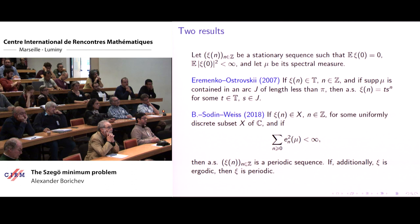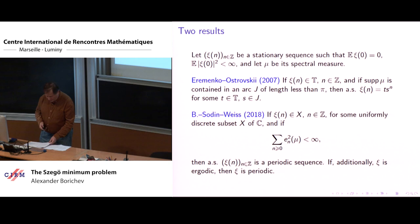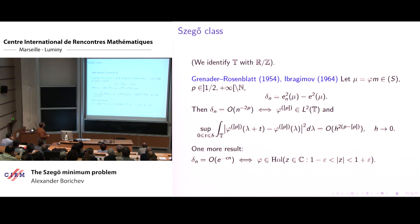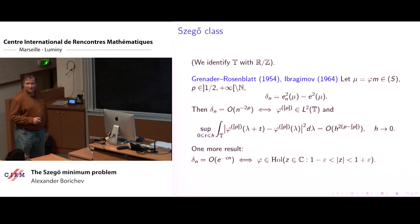What is known about the behavior of the coefficients e_n? From now on we identify the unit circle with R factorized by Z. The first results in the direction we consider correspond to Szegő class measures. They were obtained by Grenander-Rosenblatt in 1954 and Ibragimov in 1964 — so you can see that the problem was of interest to probabilists.